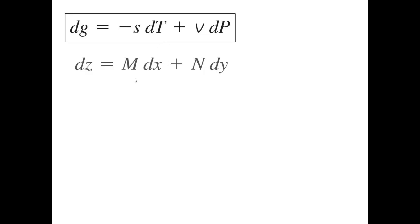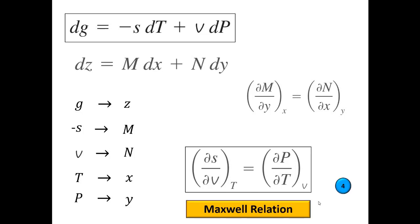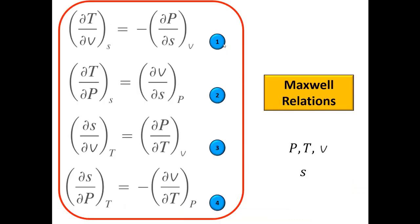For the last Gibbs function, dG = -SdT + VdP: mapping G to z, -S to M, t to x, V to N, and P to y, and applying the derived identity, we get the fourth Maxwell relation. To summarize, the four Maxwell relations are derived from the Gibbs functions and all relate differentials of pressure, temperature, volume, and entropy — allowing us to determine how entropy varies with these measurable properties.